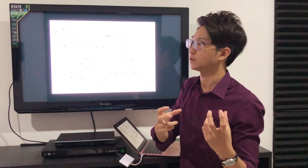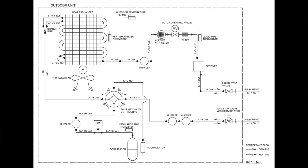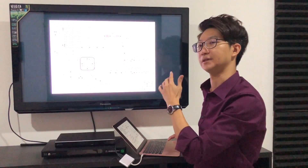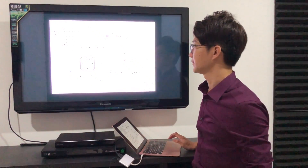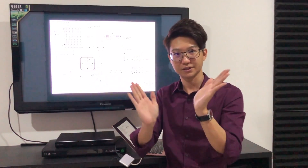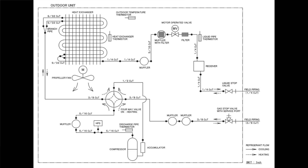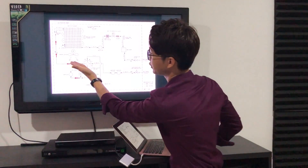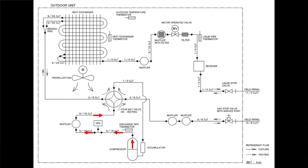The schematic shows the compressor, heat exchanger, and expansion valve. For a heat pump, there is an extra four-way valve — also called a reversing valve — which diverts the refrigerant in different directions. In normal cooling mode, refrigerant starts from the compressor as hot gas and goes to the four-way valve, which is set to cooling mode. The refrigerant then flows to the outdoor heat exchanger first, which acts as the condenser, condensing the hot gas back to liquid.